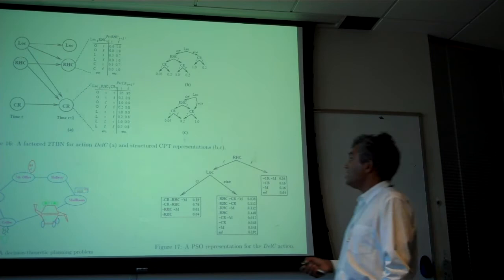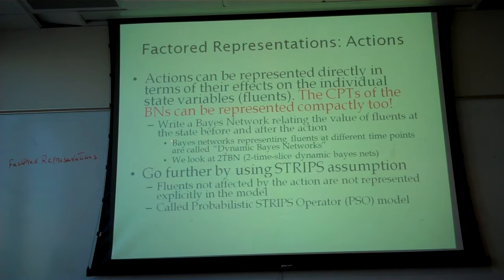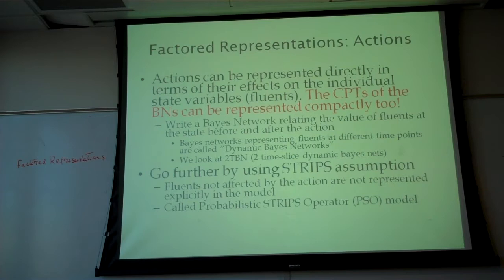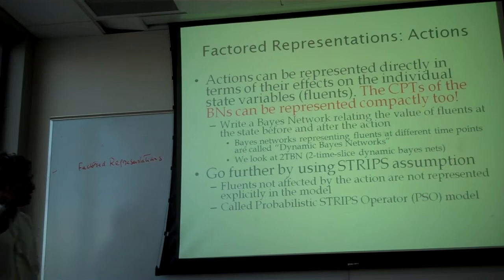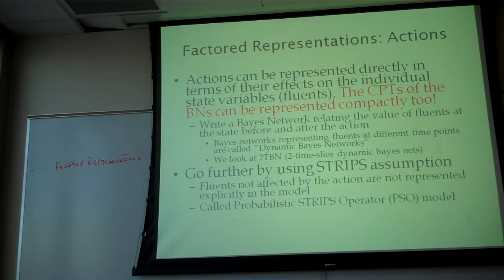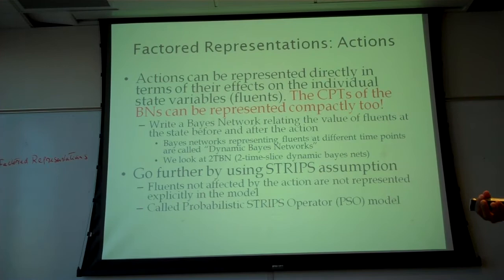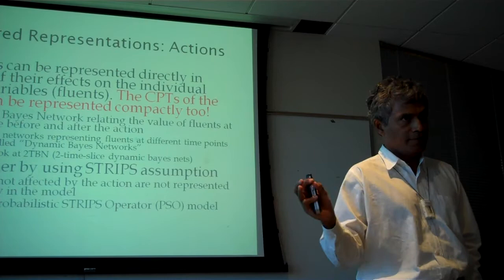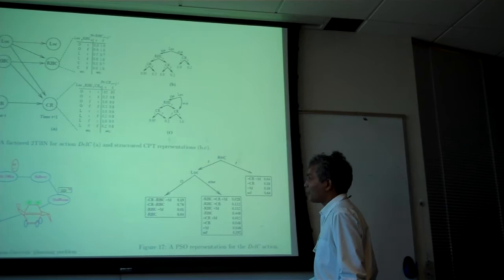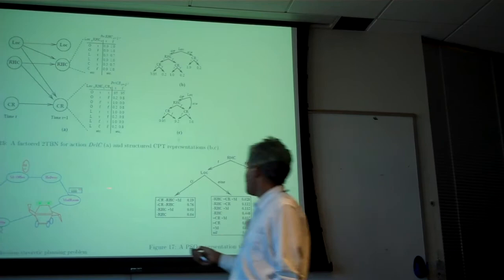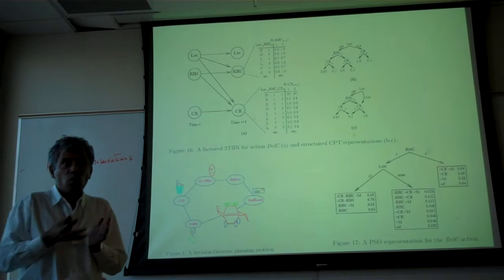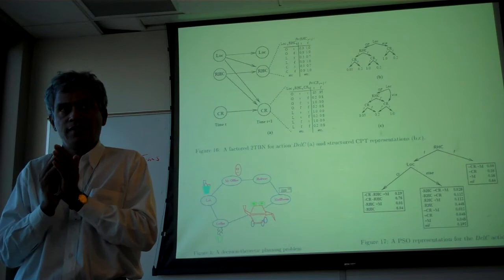A first idea is to write a Bayesian network relating fluent values before and after the action — these are two-time-slice dynamic Bayesian networks. We can go further using the STRIPS assumption: fluents not affected by an action don't appear in the description, and every fluent affected does appear explicitly. This gives us probabilistic STRIPS operators.